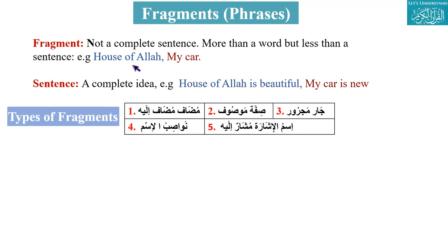Just to recap, we started this Nahw with properties of Ism. Brother Ahsan, if you can recall the properties of Ism — how many properties are there? So there are four properties of Ism. In order: number, gender, type (Kism), and status.